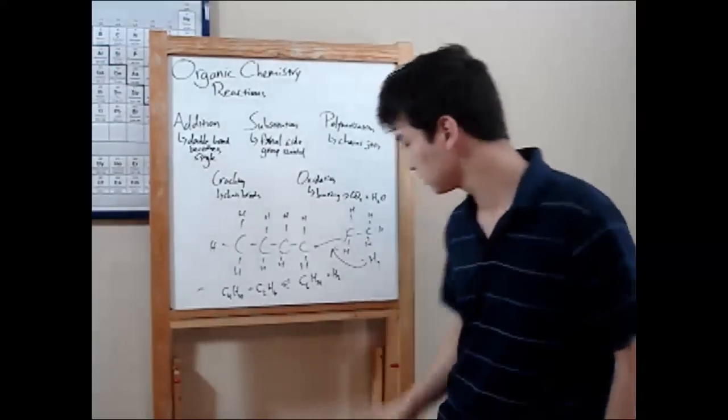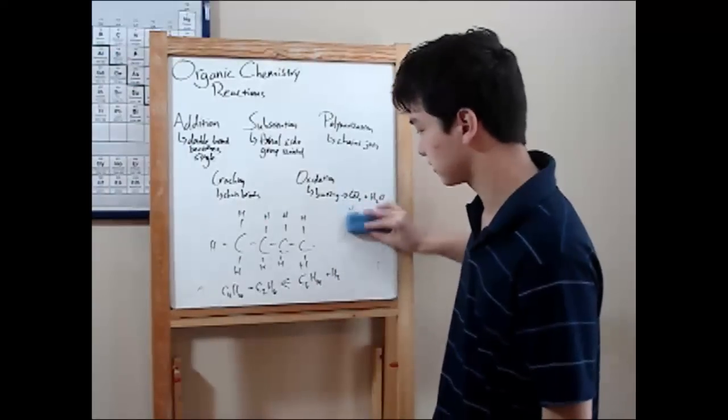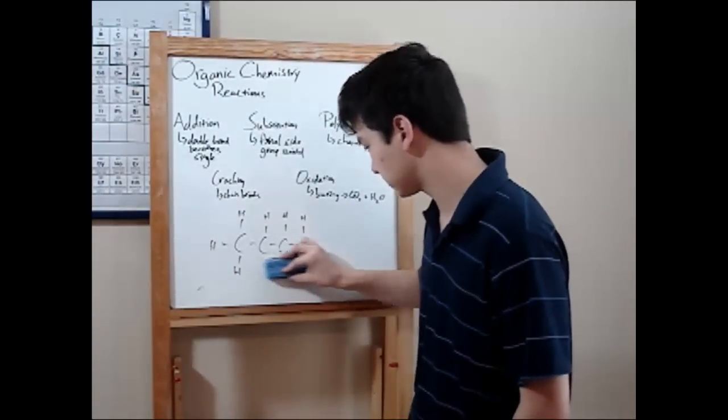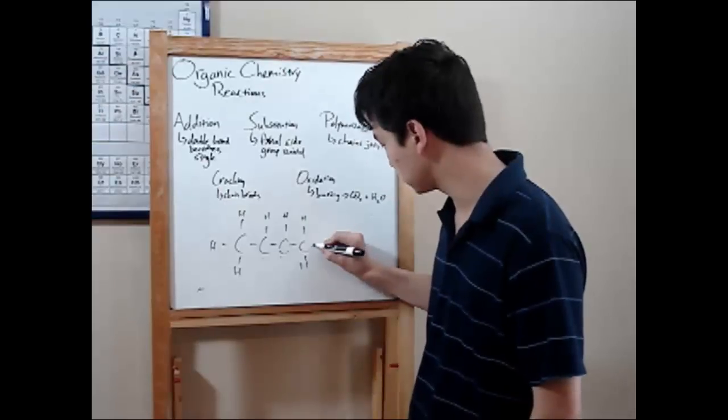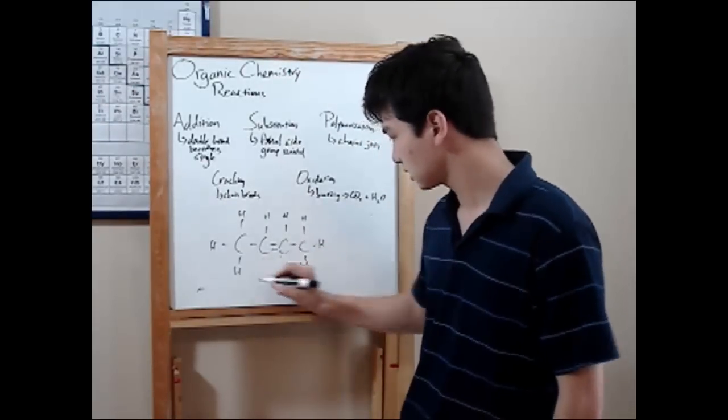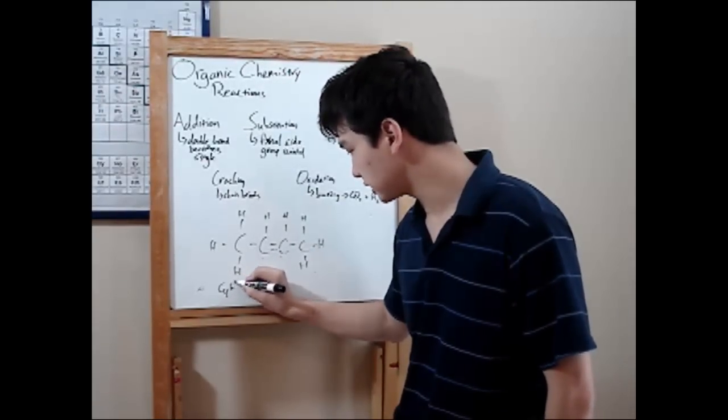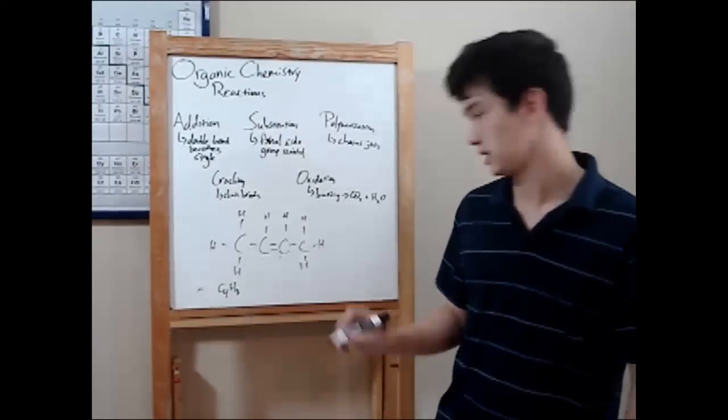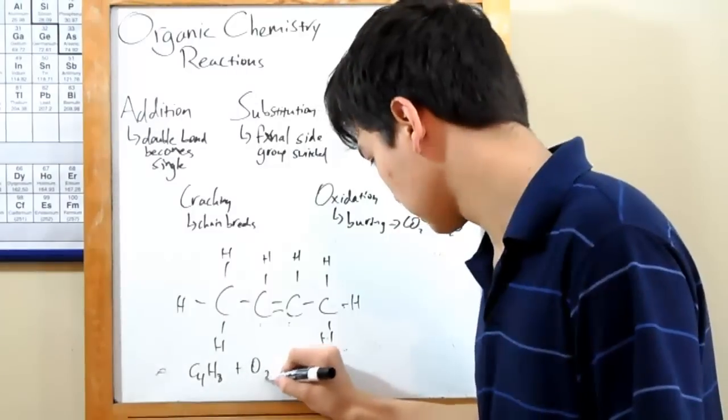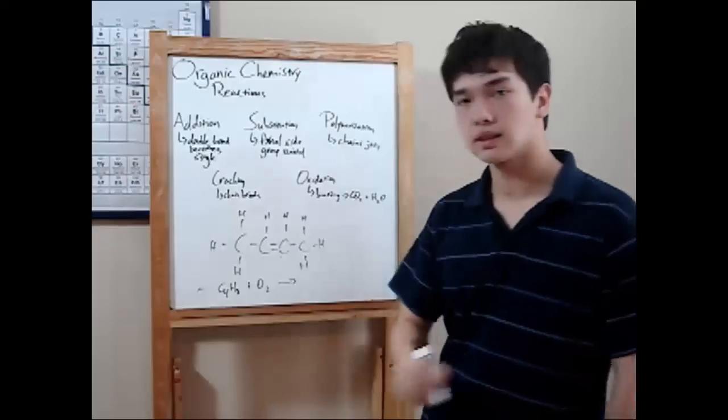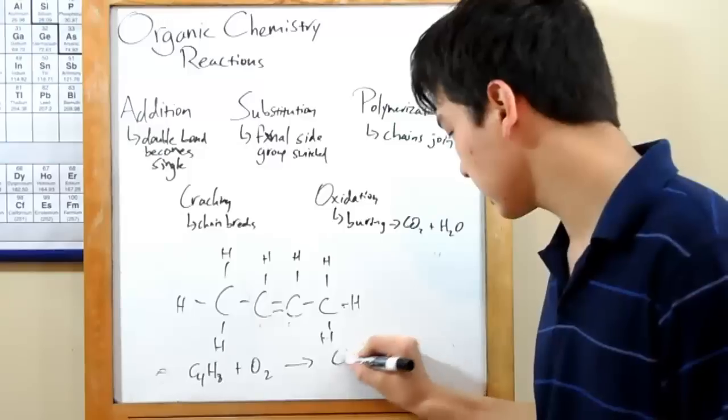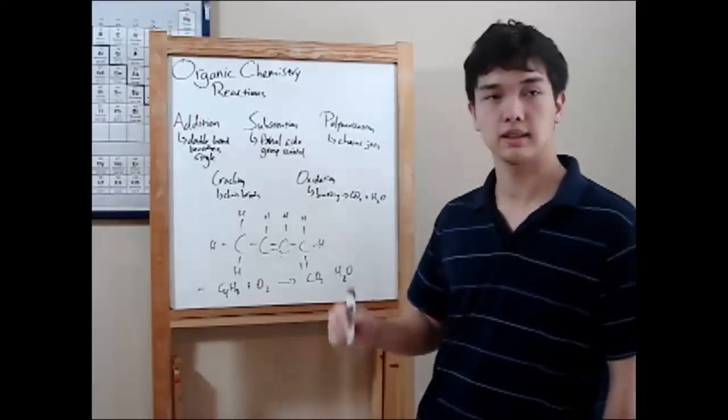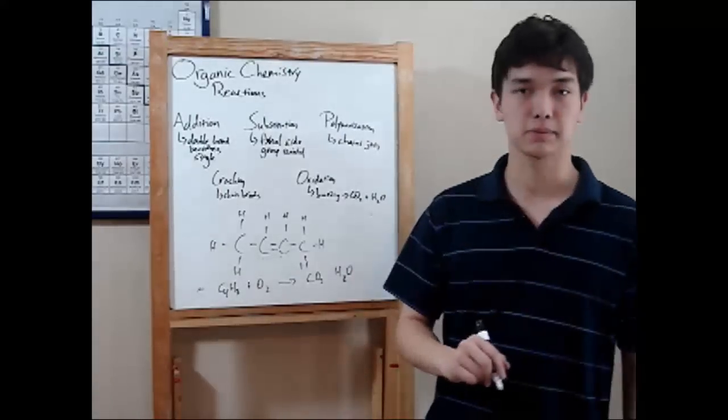Last is oxidation. That's basically when you burn stuff. So let's head all the way back to the beginning and go with 2-butene. C4H8. In an oxidation reaction, well, oxidation, you'll need oxygen. Burning usually occurs in oxygen. And then you've got carbon dioxide and water as your products. Whenever you see a carbon compound in oxygen, carbon dioxide and water is what you'll see as products.